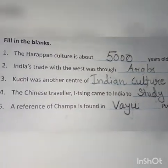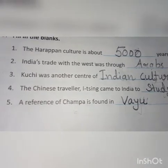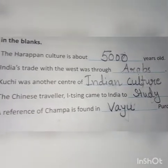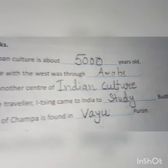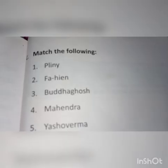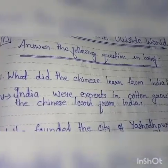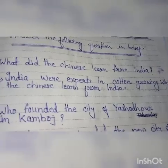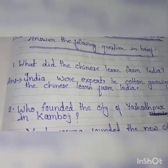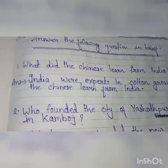Question number three: Kuchi was another center of — answer: Indian culture. Question number four: The Chinese traveler I-Tsing came to India to — answer: study Buddhism. Now for the match the following section — India were experts in cotton growing, which the Chinese learned from India.